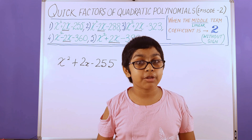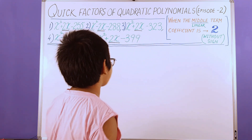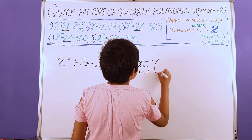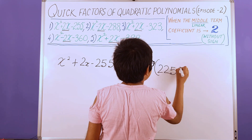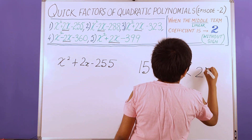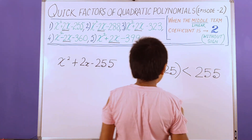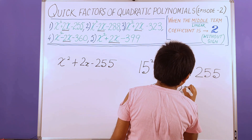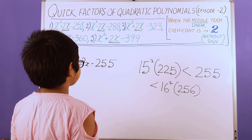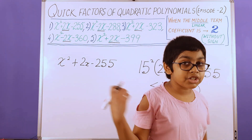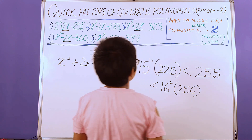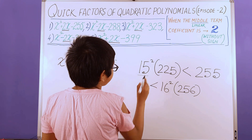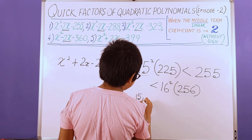We need to locate 255 between two consecutive perfect square numbers. The perfect square numbers are 15 squared, which is 225, less than 255, less than 16 squared, which is 256. Since the middle term coefficient is 2, we need to add 2 to the smaller number, and we get the pair 15 and 17.